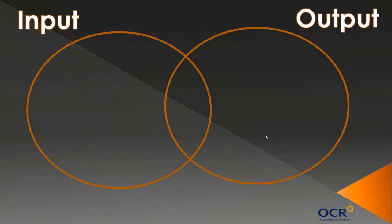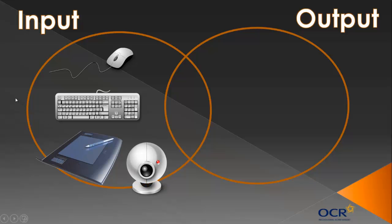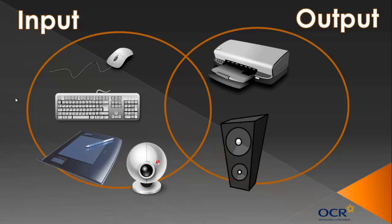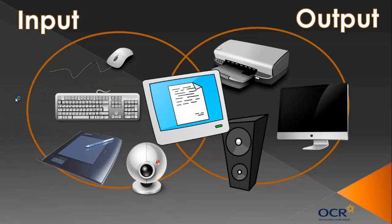Looking at a Venn diagram of input and output devices: input devices include a mouse, a keyboard, and a graphics tablet — which I use from time to time in these videos. Also a webcam is an input device because it films you and the data of the video goes into your computer. Output devices include a speaker, a printer, and a monitor. But some devices can be both.